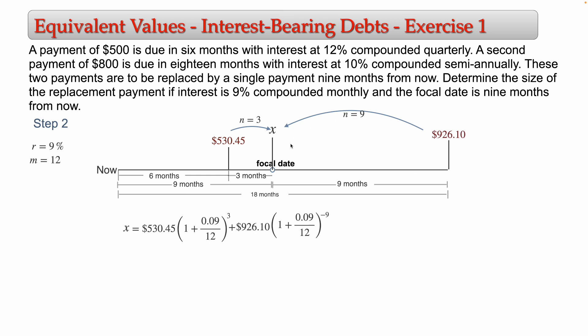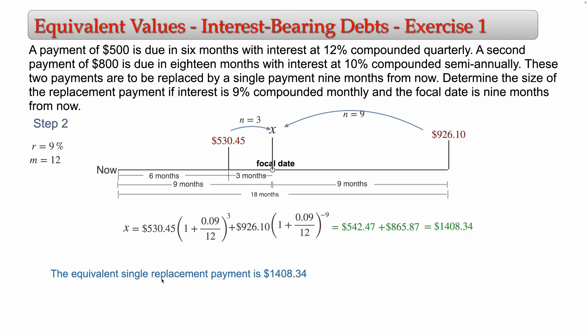Computing in a calculator: 530.45 × (1 + 0.09/12)^3 = $542.47. Then 926.10 × (1 + 0.09/12)^(−9) = $865.87. Adding these two: 542.47 + 865.87 = $1,408.34. So the equivalent single replacement payment is $1,408.34.